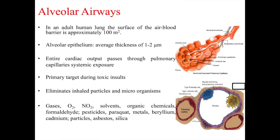In an adult human lung, the surface of the air-blood barrier is approximately 100 square meters, due to the millions of individual alveoli. Alveolar epithelial cells have an average thickness of about one to two microns. A cross-section shown on the slide highlights neighboring cells including macrophages and capillaries.